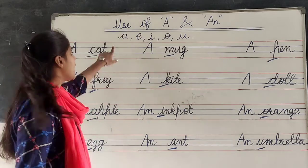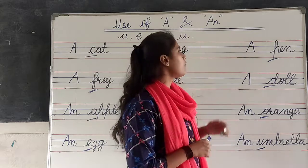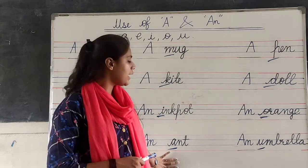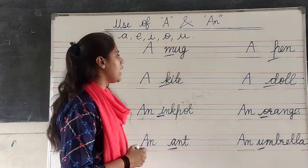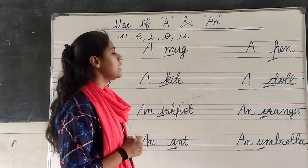What are vowels? A, E, I, O, U. Okay? So, before vowels, we have to write An. And if there is no vowel, then we have to write A.